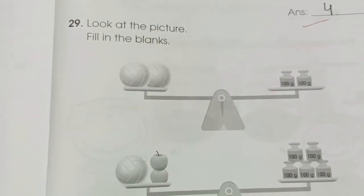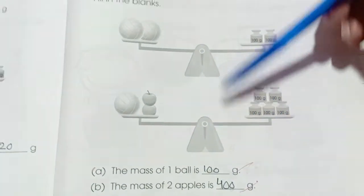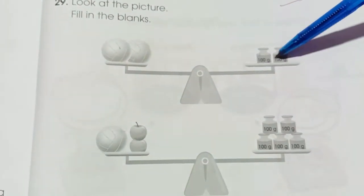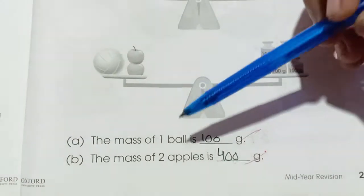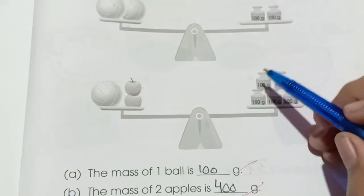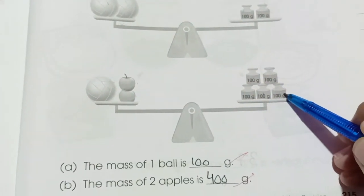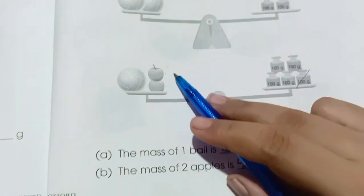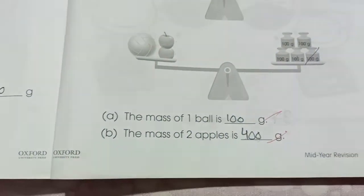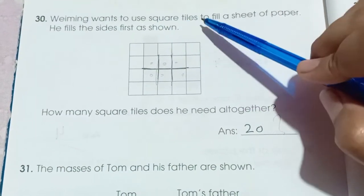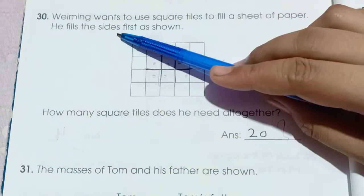Number 29: Look at the picture and fill in the blanks. The mass of one ball: there are 2 balls shown with a total of 200 grams, so each ball is 100 grams. The mass of two apples: subtracting the ball mass (200) from total (400) gives 200 grams for two apples.